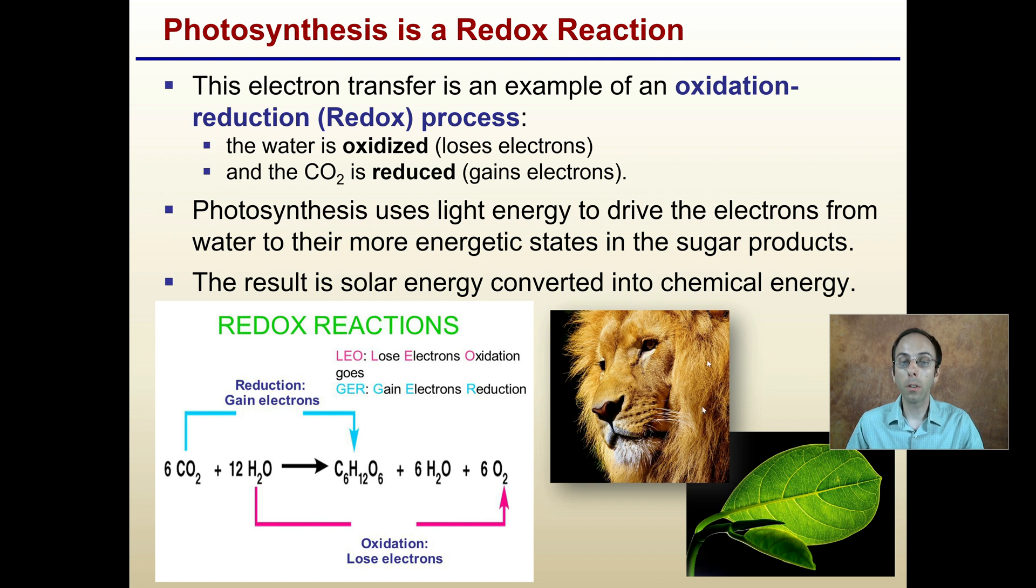How we remember this is called LEO the lion says GER. LEO, L-E-O, losing electrons is oxidation. Gaining electrons is reduction. So LEO says GER, very commonly said, easy to remember, to help you remember what's going on with a redox reaction. We see here, reductions are gaining electrons, the carbon dioxide going to the sugar, and water ultimately going to the oxygen is the oxidation that's losing electrons in that process.